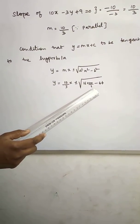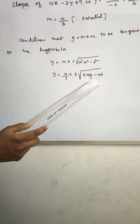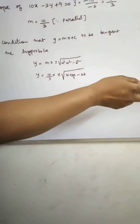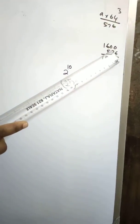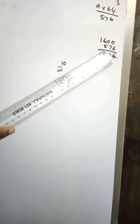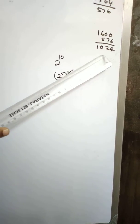1600 minus 576 is 1024. Taking the square root of 1024.